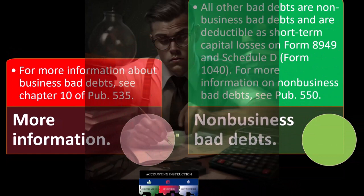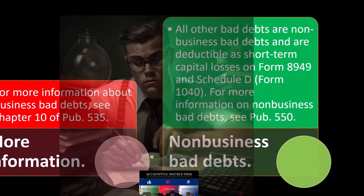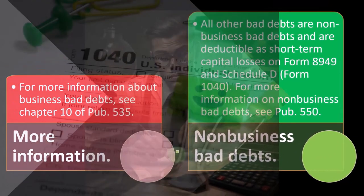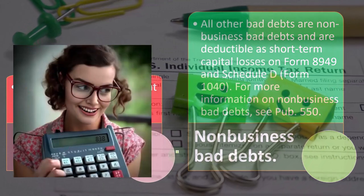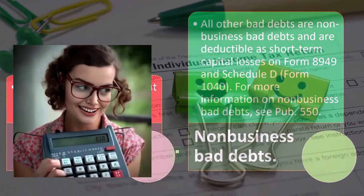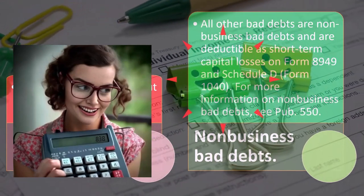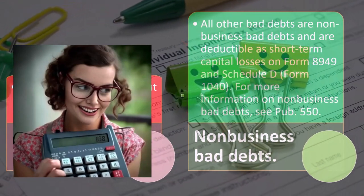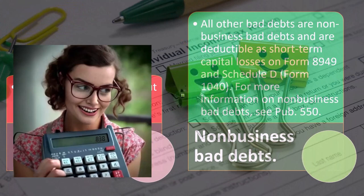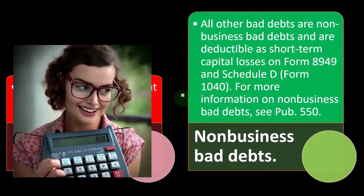For non-business bad debt, all other bad debts are deductible as short-term capital losses on Form 8949, Schedule D. If you had a bad debt that's not business related, you can look at the rules for Schedule D. For more information on non-business bad debt, see Publication 550.